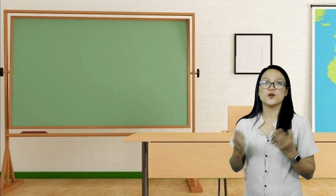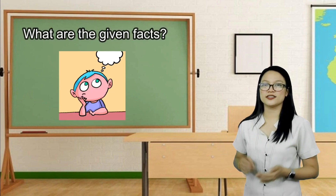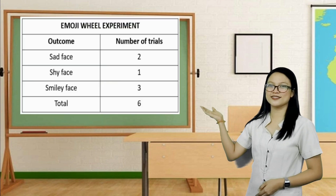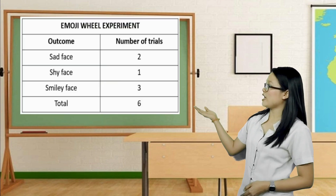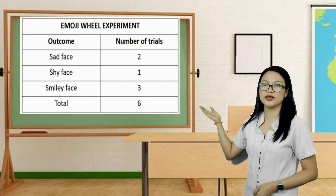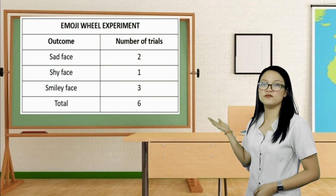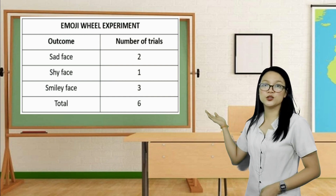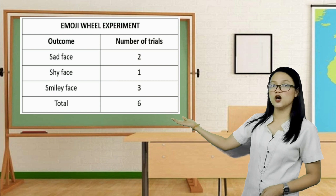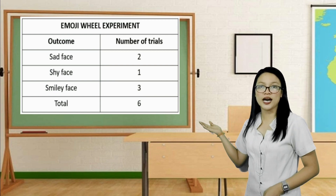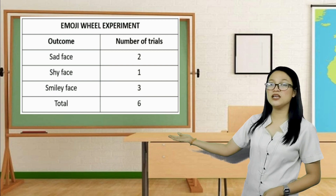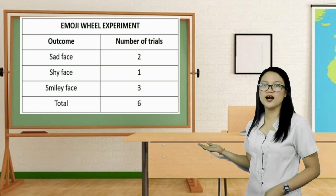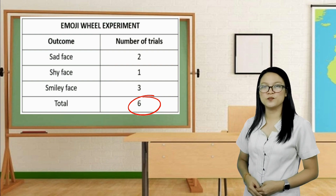Next — what are the given facts? Check your tally sheets to see if they match mine. In the emoji wheel experiment, the sad face was selected two times, the shy face was selected one time, and the smiley face was selected three times, with a total of six number of trials.